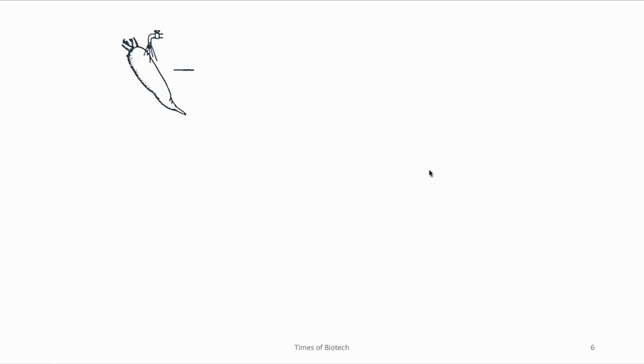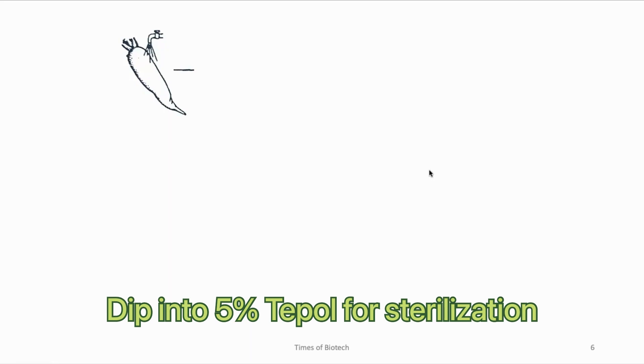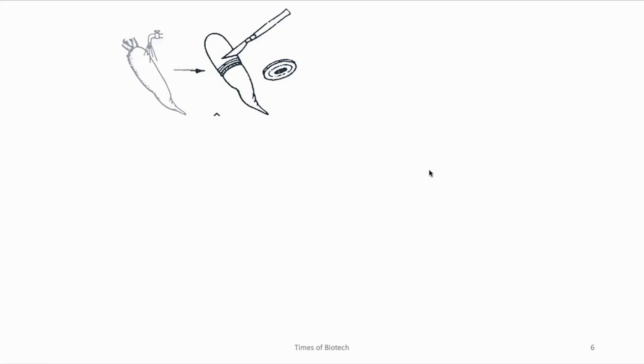For the procedure of callus culture, the first thing we need to do is select the explant. This explant can be any part of any plant as per your requirement. Here we have used a fresh taproot of carrot, which is rinsed with water thoroughly to remove all surface debris, followed by dipping the taproot into 5% Teepol for 10 minutes. You have to perform all the steps in a laminar airflow under aseptic conditions. Even the scalpels used for the procedure must be dipped into 70% ethanol and flamed before every use.